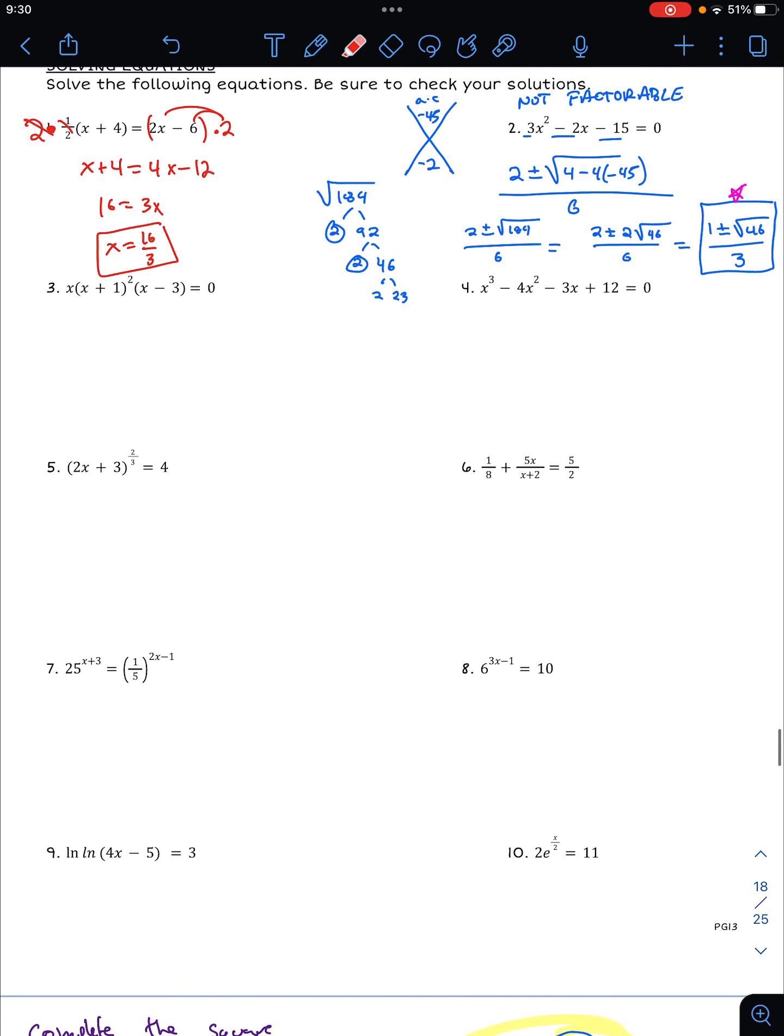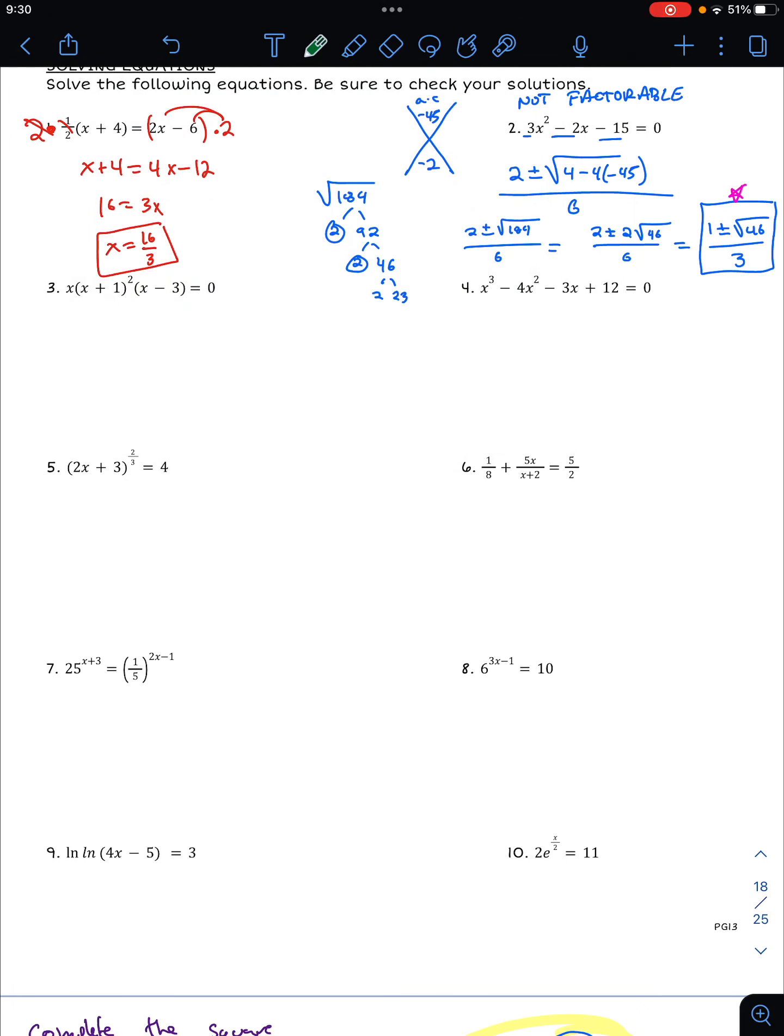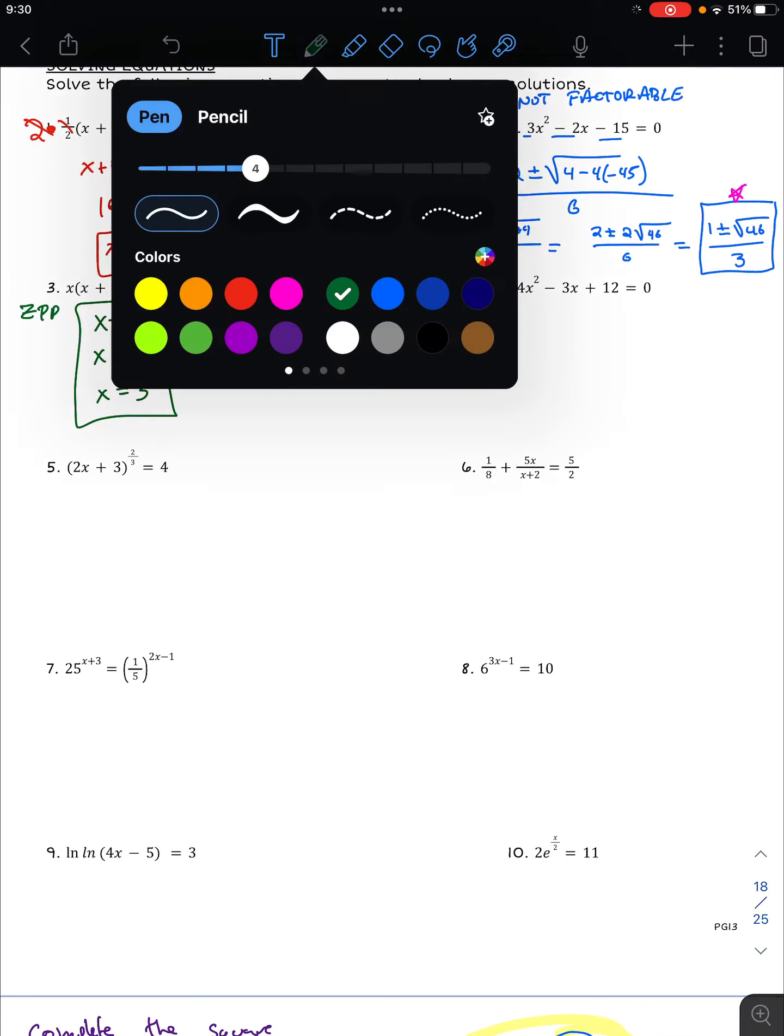The other ones I think should be a little more straightforward. So like here, we just have zero product property states that if we have a bunch of things multiplied that equals zero, individually, they could equal zero. So x equals zero, x plus one could equal zero. So x could be negative one, x minus three equals zero. So x equals three. So that's our solution set here.